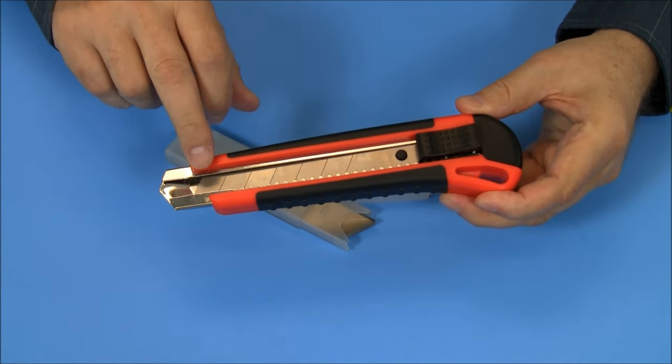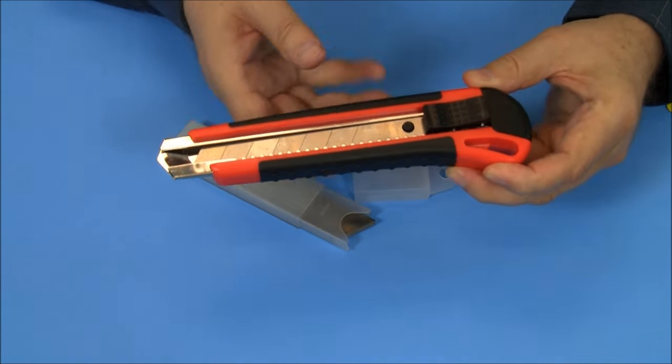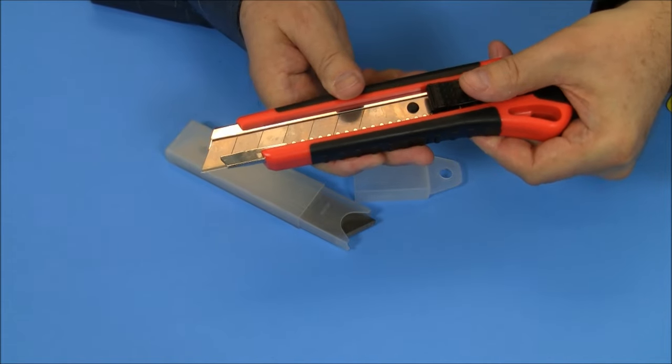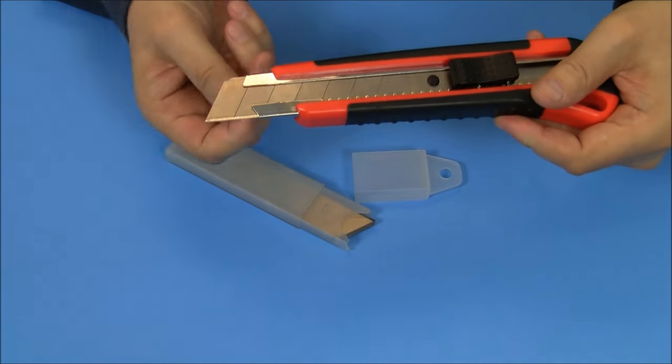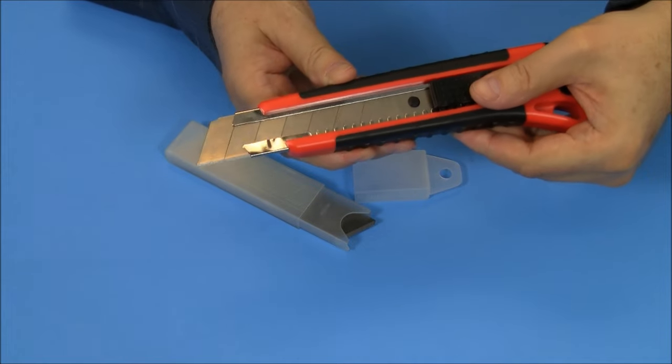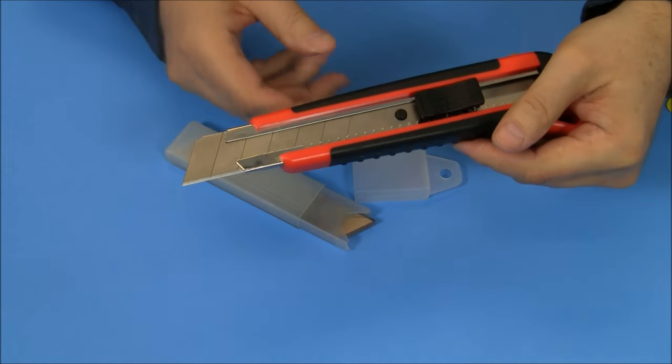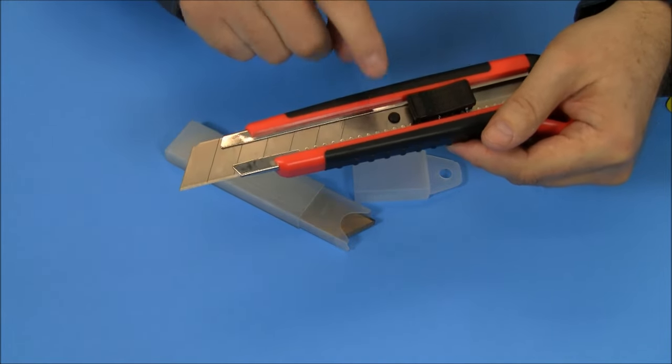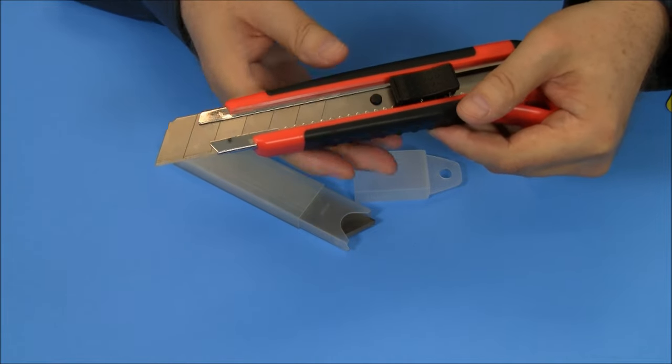This box cutter features one long blade that as it gets dull you just break off a piece of it and you have a fresh blade. There's up to seven blades on this one strip of blade.